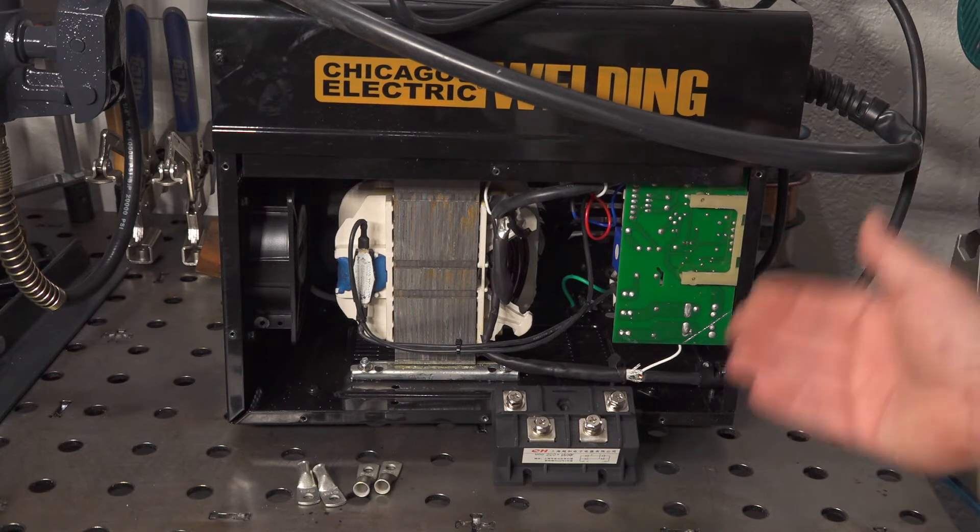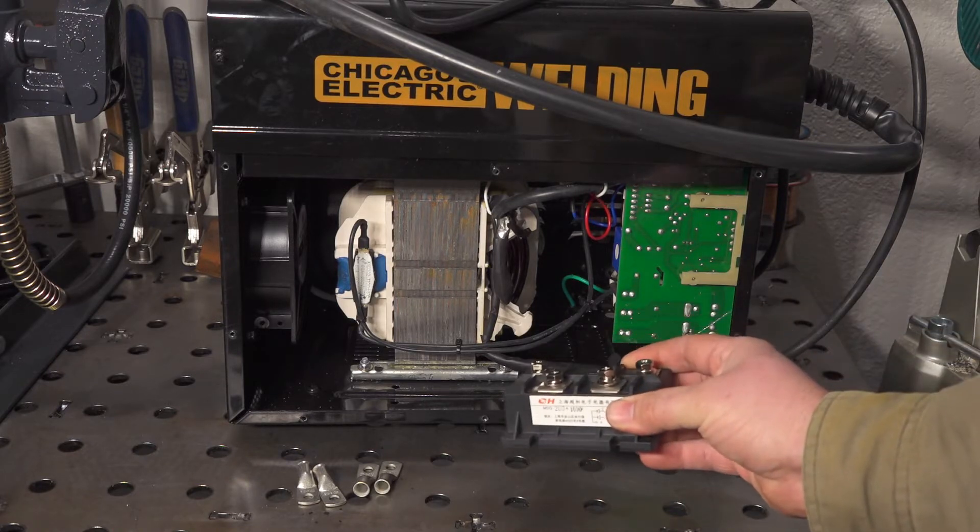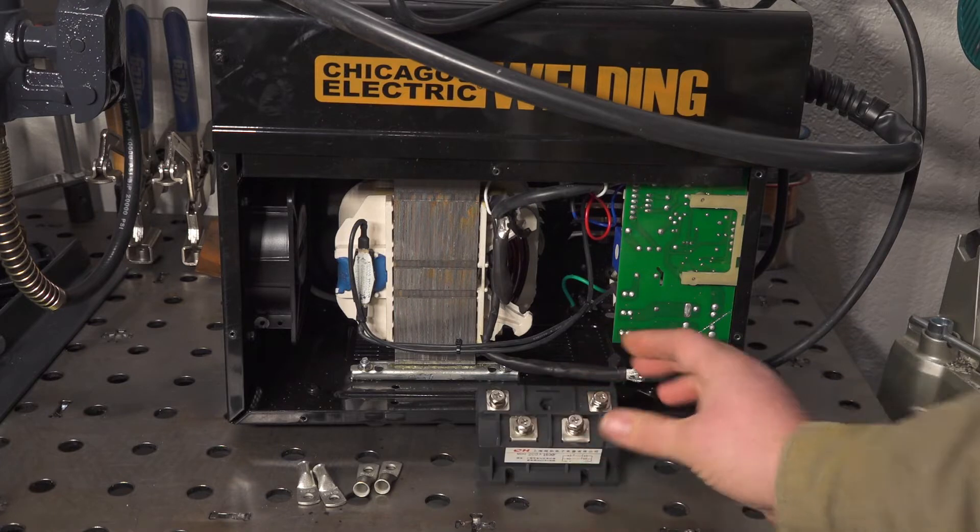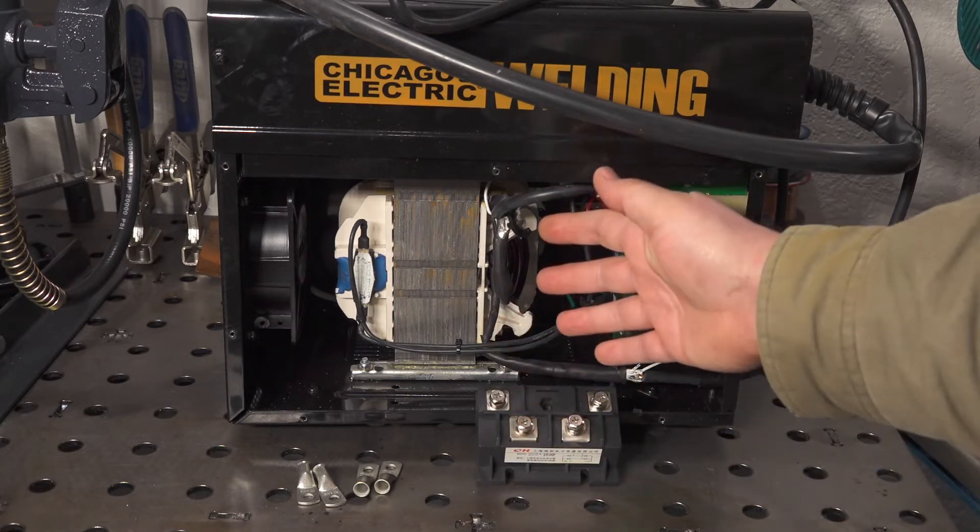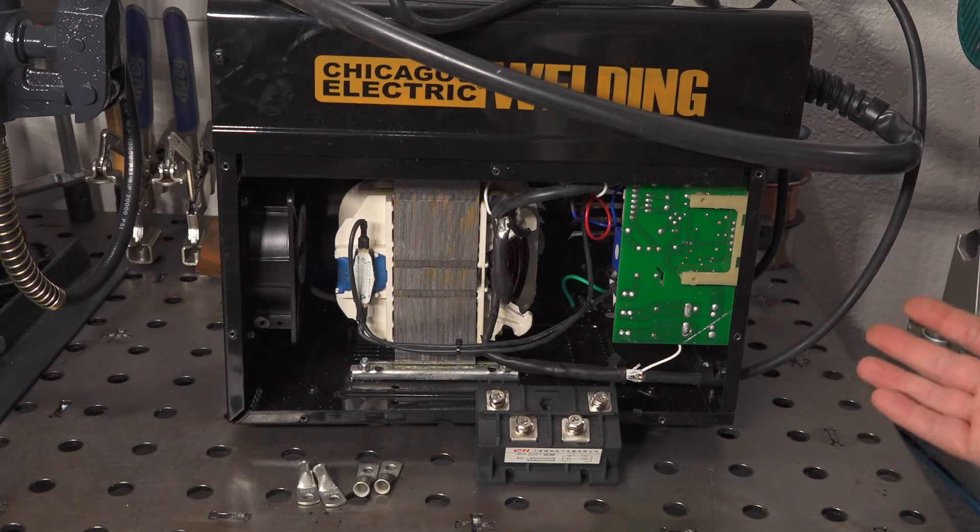But today I'm going to be doing it in basically the simplest way possible. I'm just going to install a simple rectifier bridge, a full wave rectifier, to convert the AC from the transformer into DC output and that's it. I'm not going to put anything else in there.